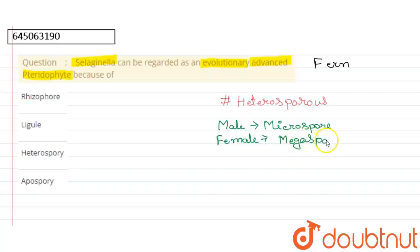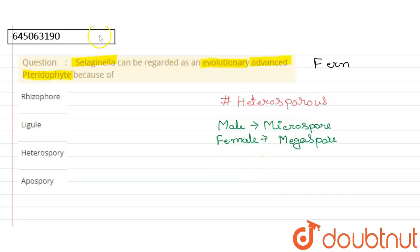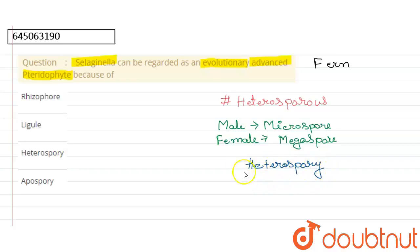Both microspore and megaspore are borne on Selaginella, so it is known as heterosporous because both types of spores are produced. This heterospory is regarded as the evolutionarily advanced character of pteridophyte, making it the correct answer. But we will also discuss the remaining options.